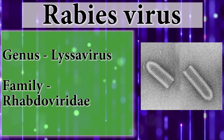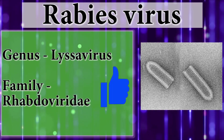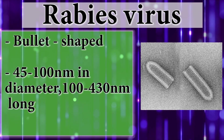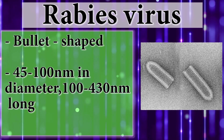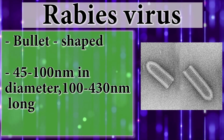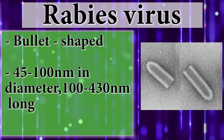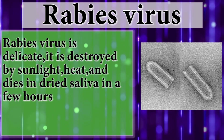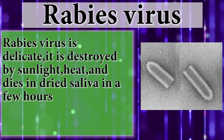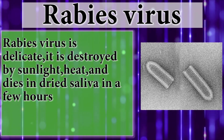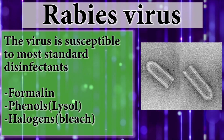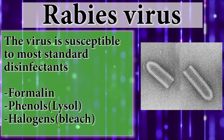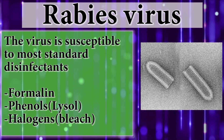When we talk about rabies virus, it belongs to genus Lyssavirus, family Rhabdoviridae. Rabies virus is a bullet-shaped virus, 75 to 100 nanometers in diameter and 100 to 430 nanometers long. Rabies virus is delicate — it is destroyed by sunlight, heat, and dies in dried saliva in a few hours. However, the virus is susceptible to most standard disinfectants: formalin, phenol, and halogens.